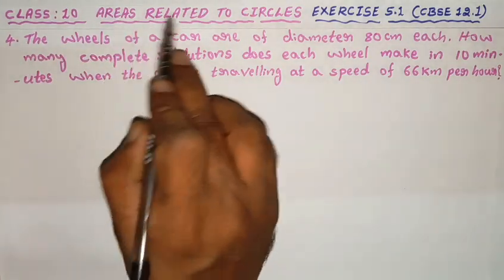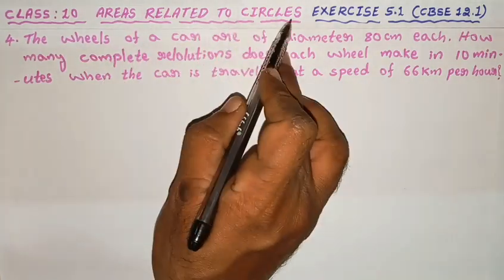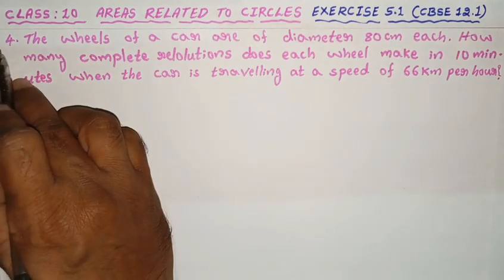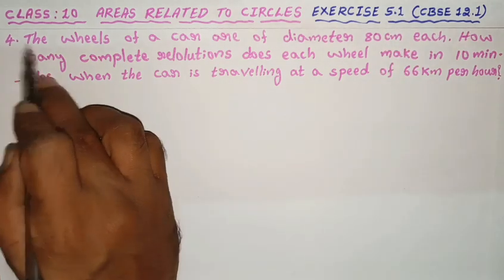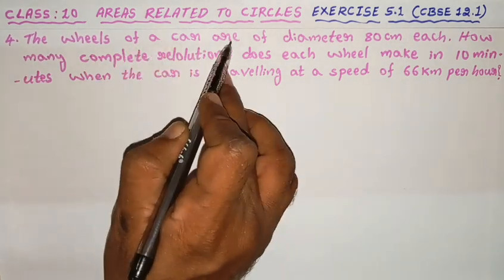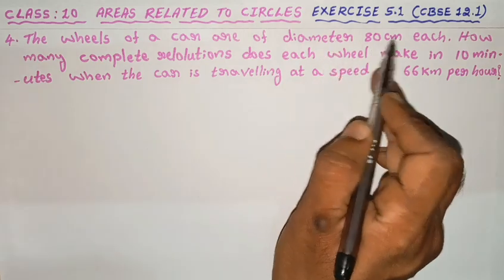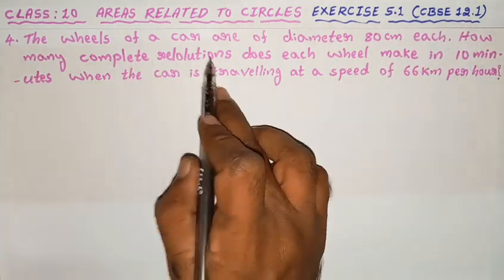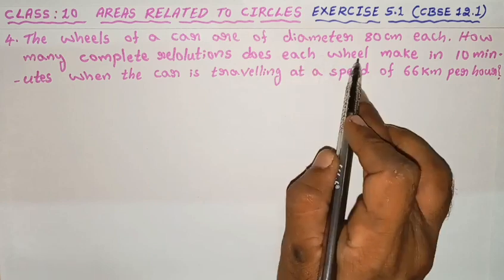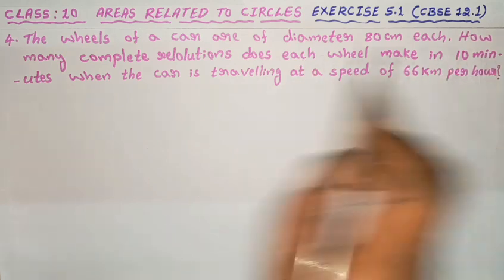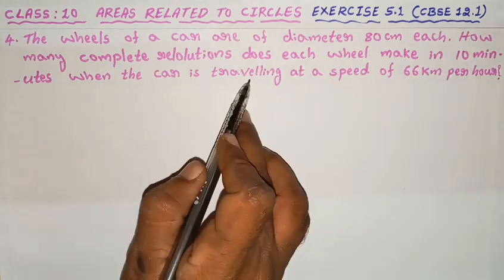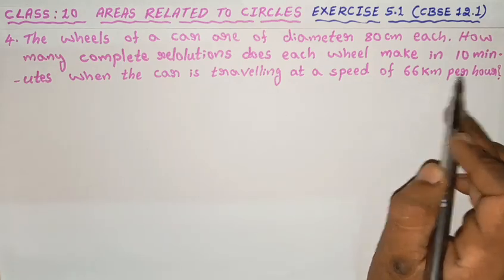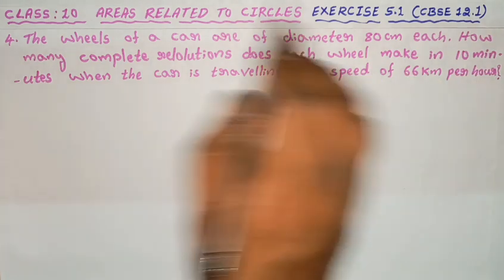Class 10, Areas related to circles, Exercise 5.1, fourth problem solve. The wheels of a car are of diameter 80 cm each. How many complete revolutions does each wheel make in 10 minutes when the car is travelling at a speed of 66 km per hour?